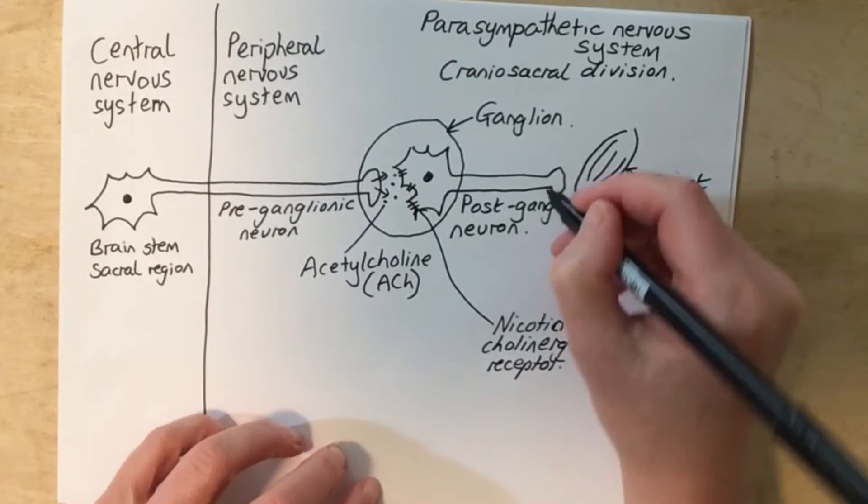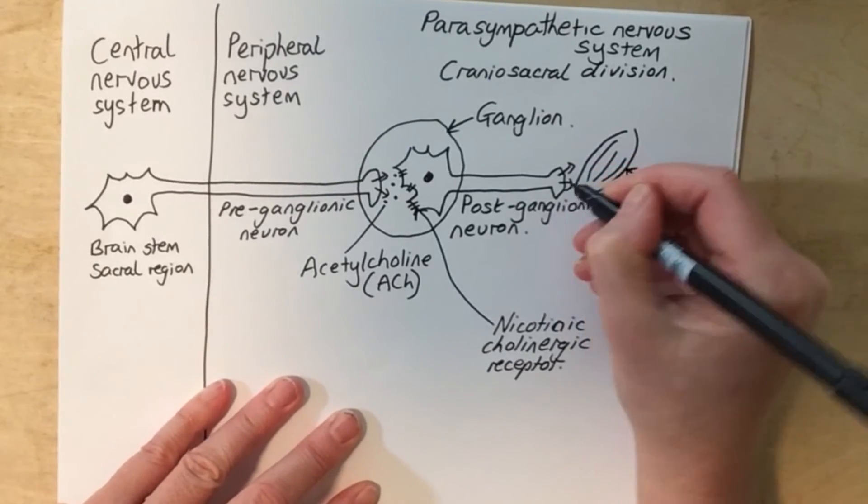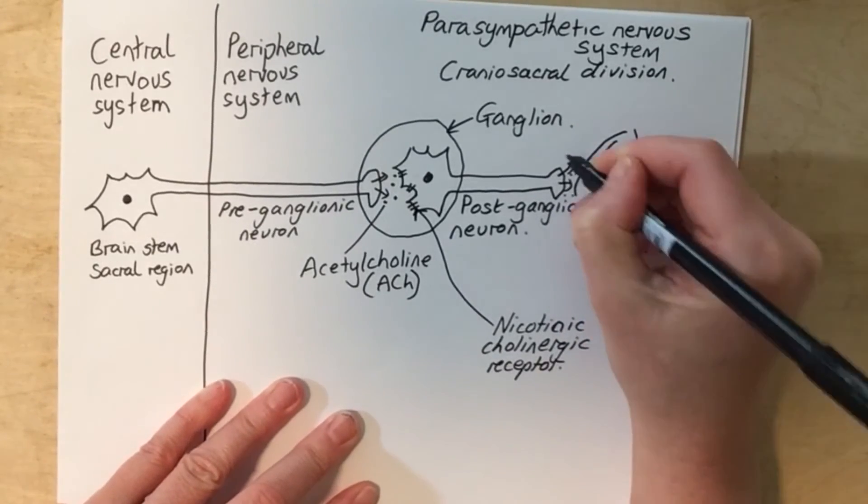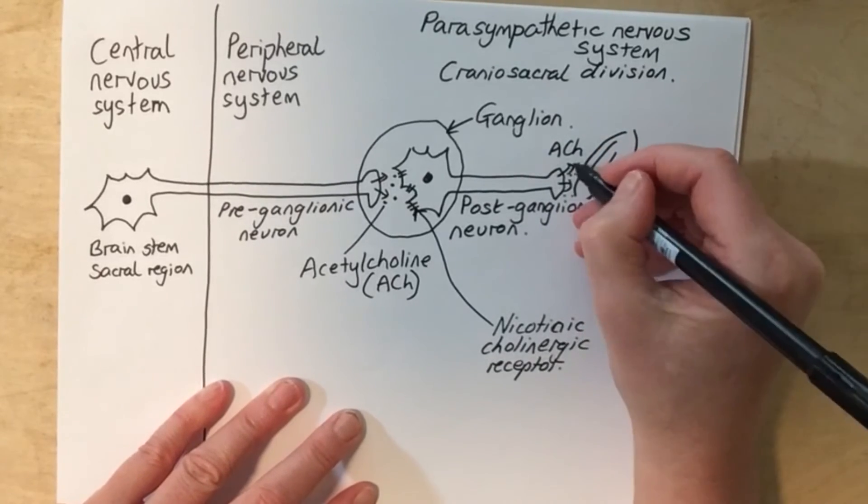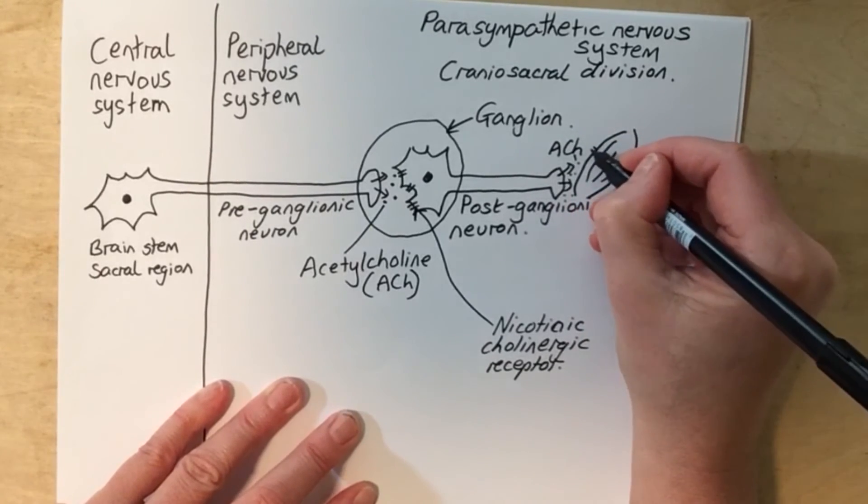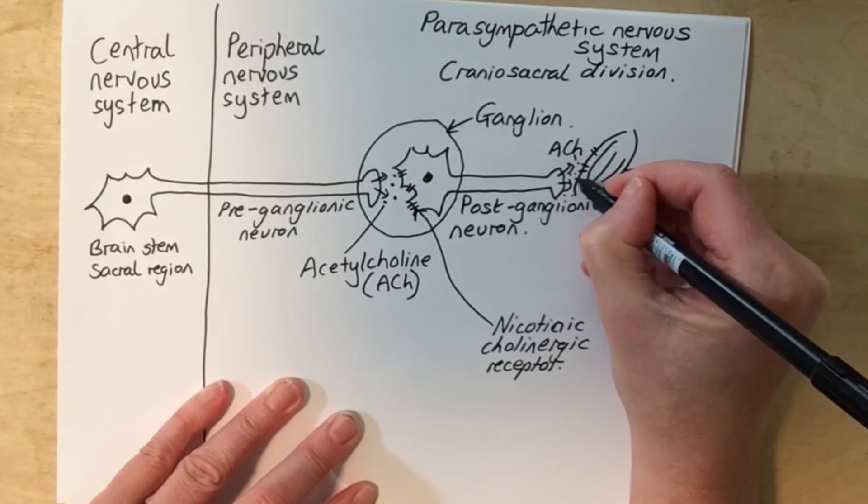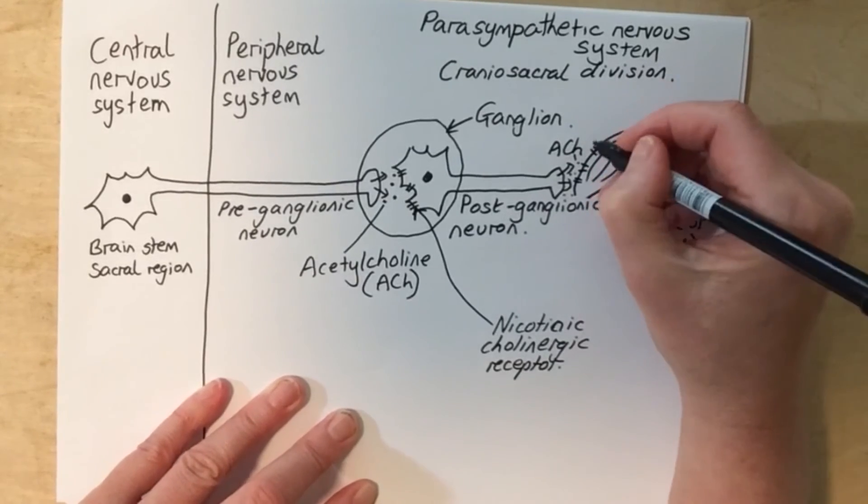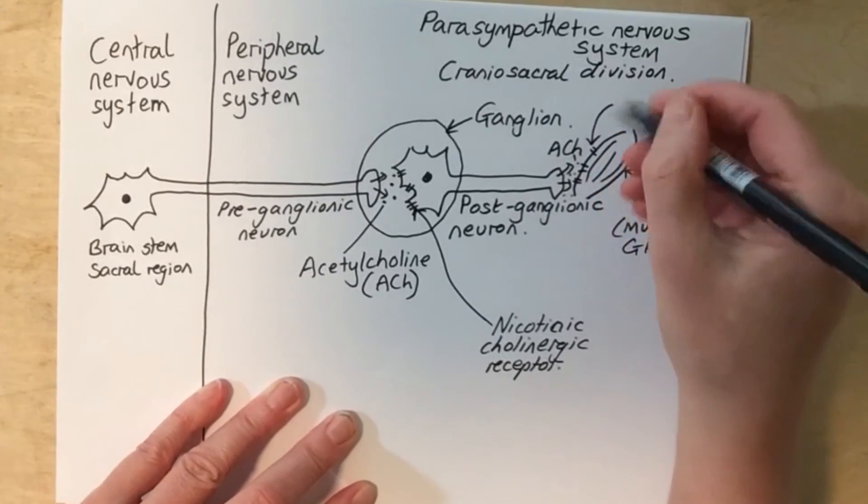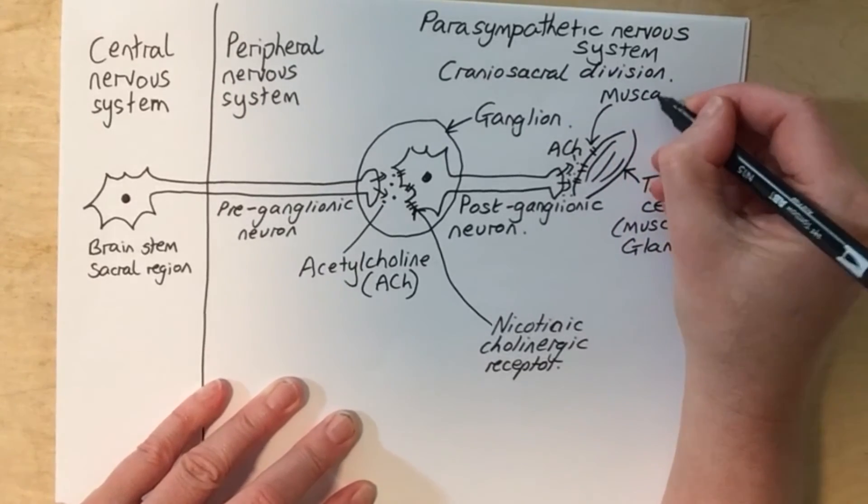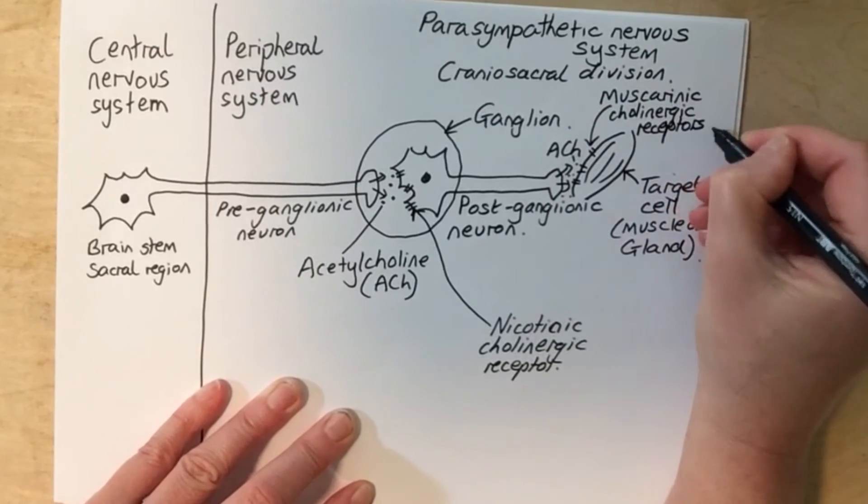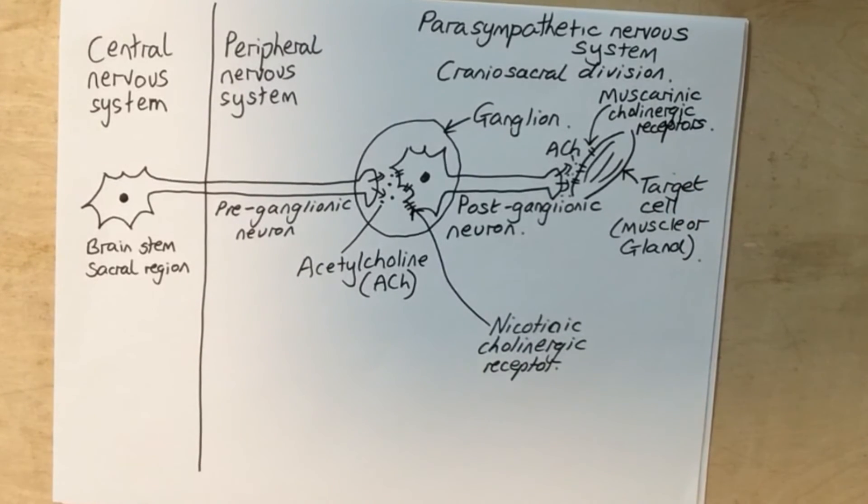The postganglionic neuron also releases acetylcholine, but these will bind to a different type of receptor on the target cell. The target cell has muscarinic receptors, muscarinic cholinergic receptors. And these are G-protein coupled receptors.